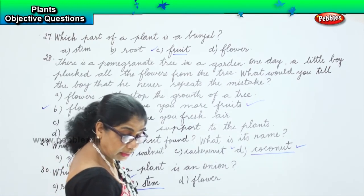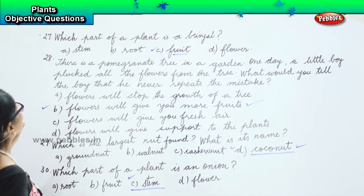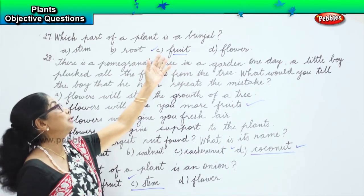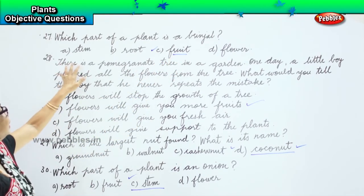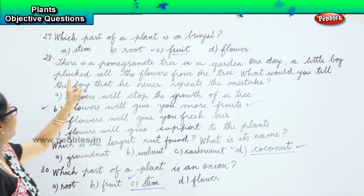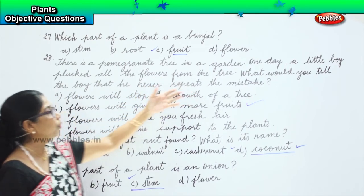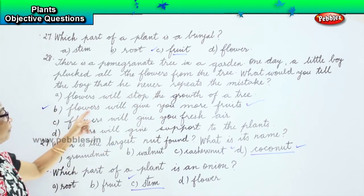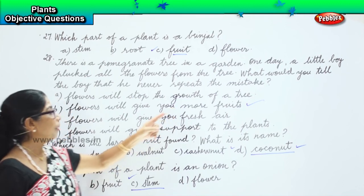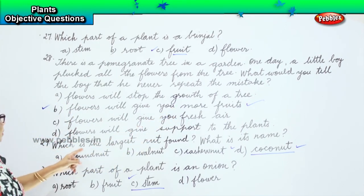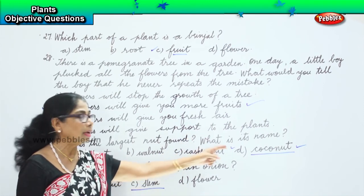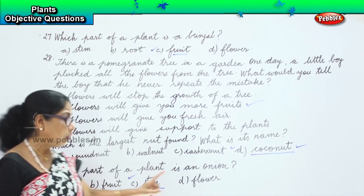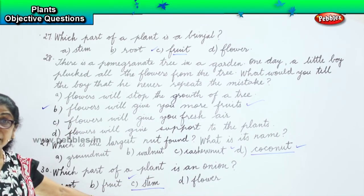Now let's look at all three answers. Twenty-seventh: which part of a plant is brinjal? Brinjal is a fruit. Twenty-eighth: a little boy plucked all the flowers from a pomegranate tree — tell the boy that flowers will give you more fruit, so do not pluck flowers. Twenty-ninth: the largest nut is coconut. Thirtieth: which part of a plant is an onion? An onion is a stem.